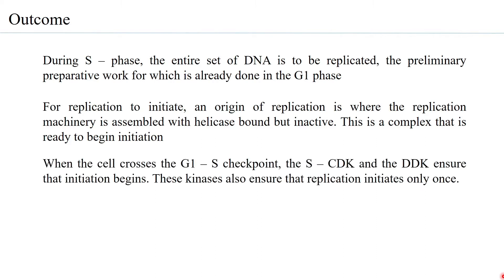When the cell crosses the G1 to S checkpoint, this is a transition phase also called the start point — it is a commitment stage. The S-CDK (S cyclin-CDK) and another kinase called DDK (Dbf4-dependent kinase) ensure that initiation begins. These kinases regulate the S phase and also ensure that replication initiates only once in a cell cycle.